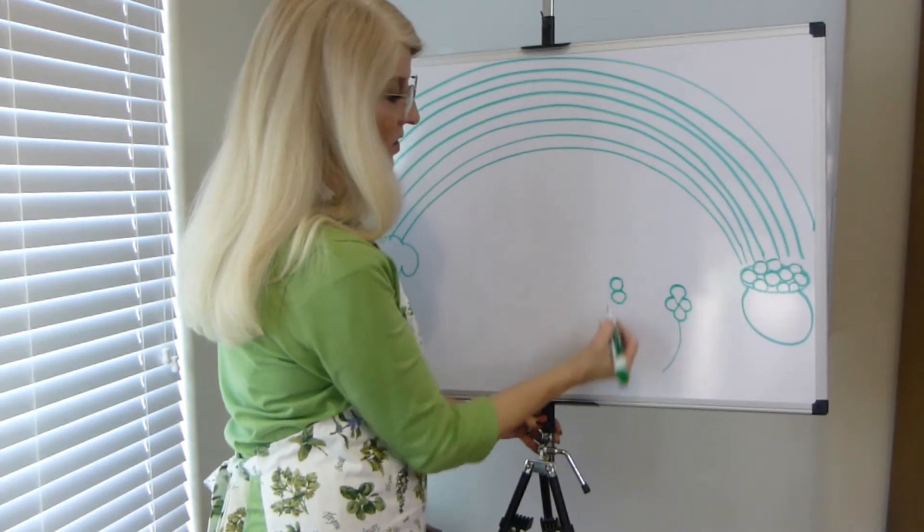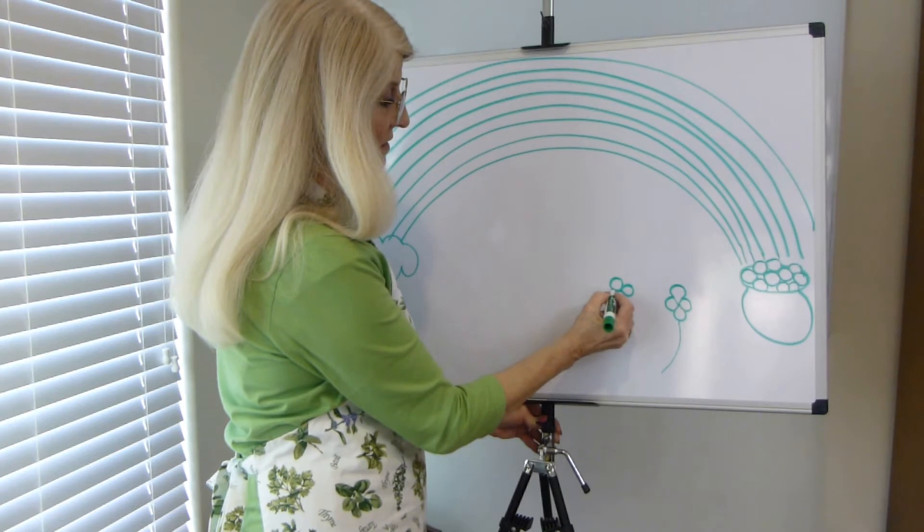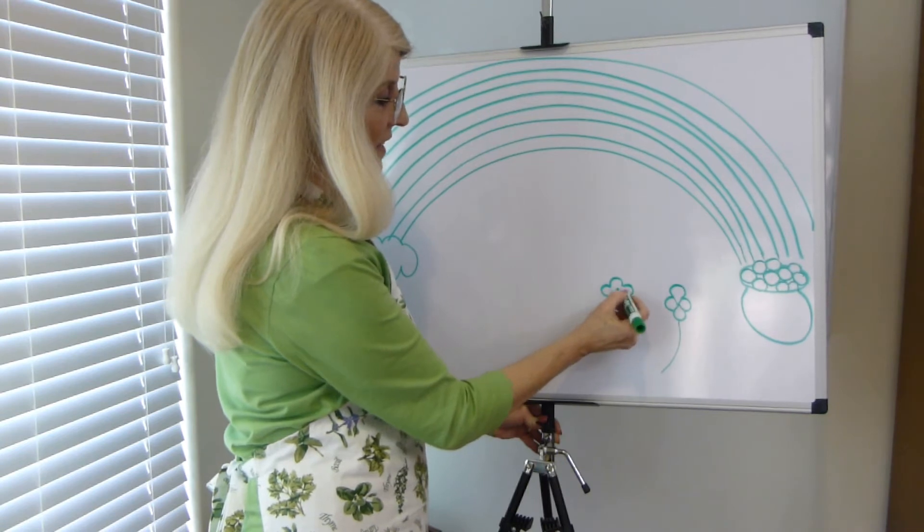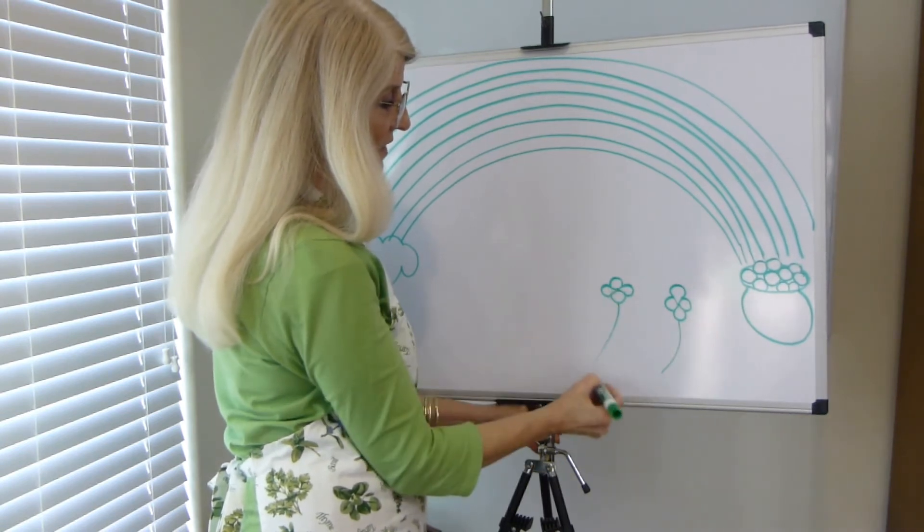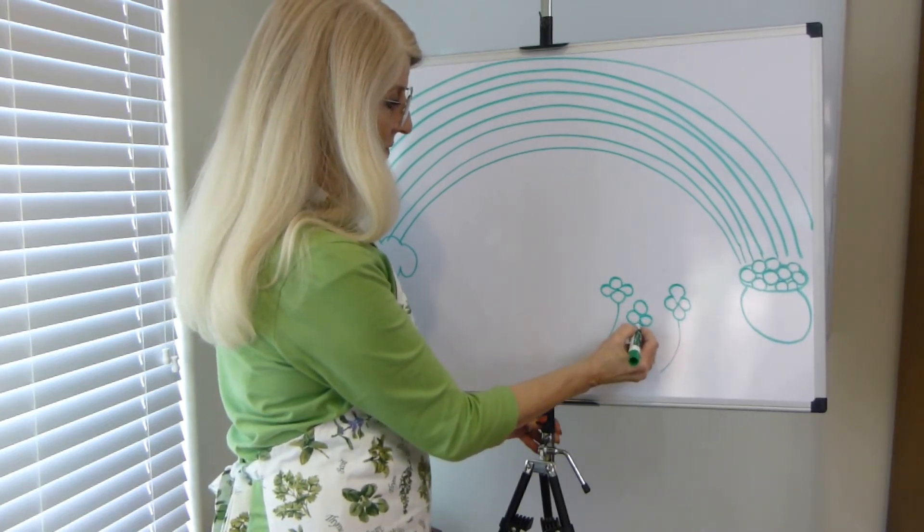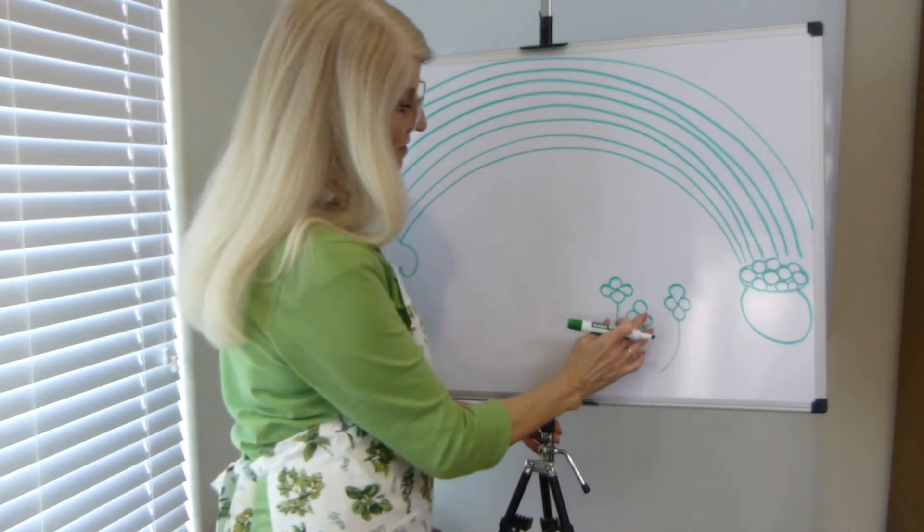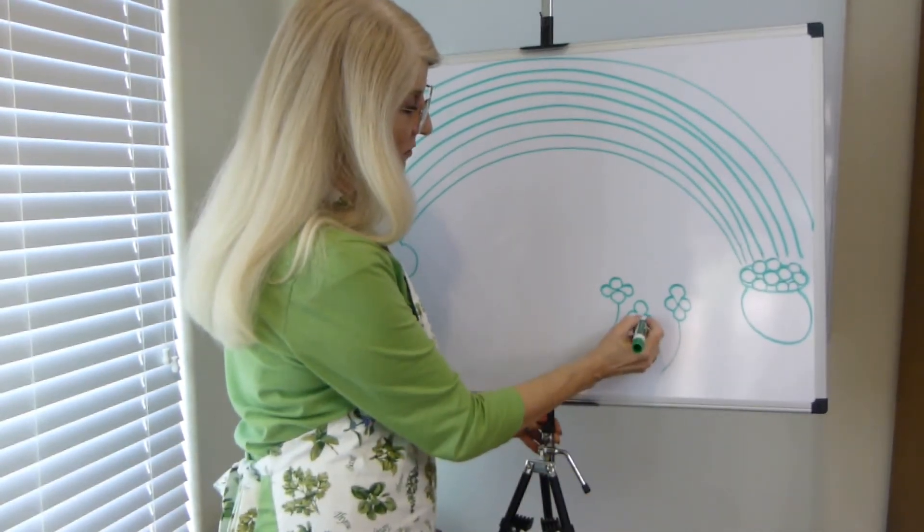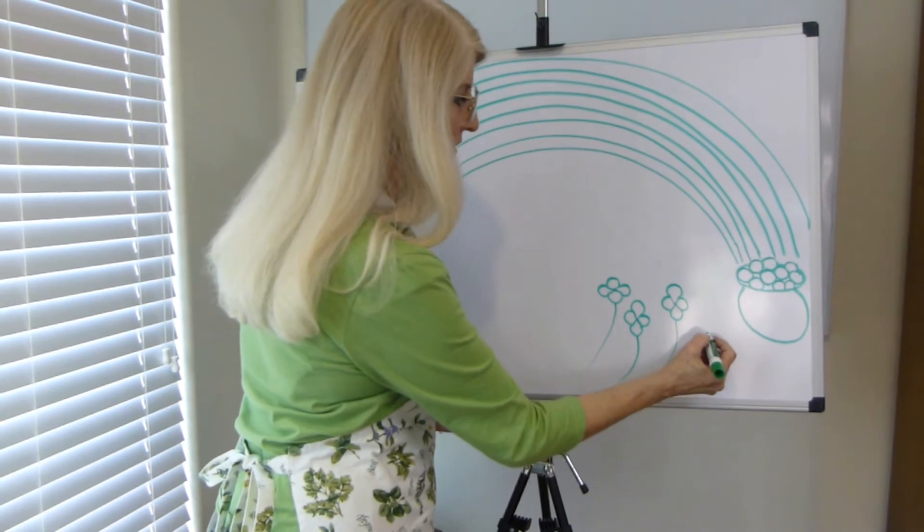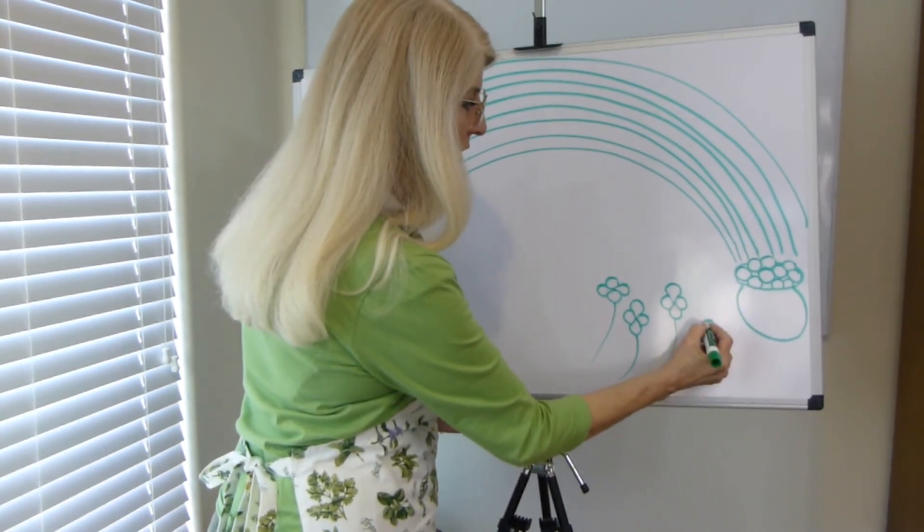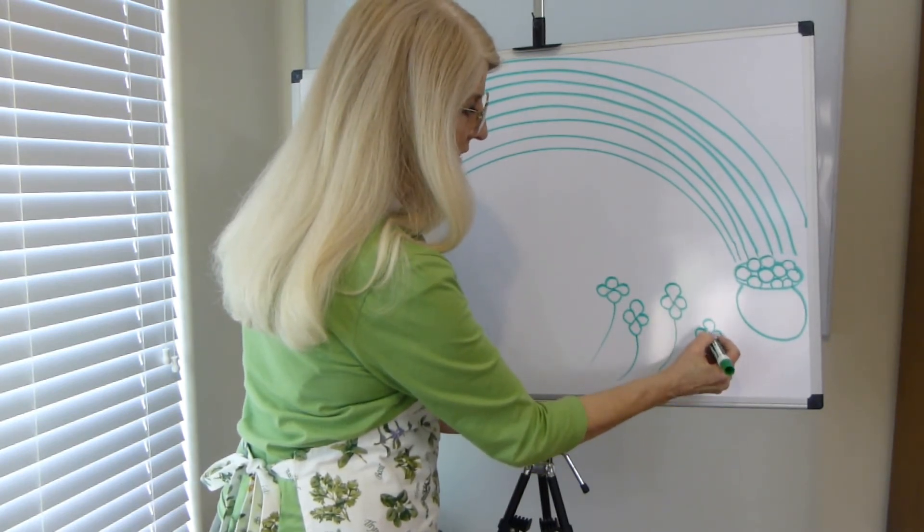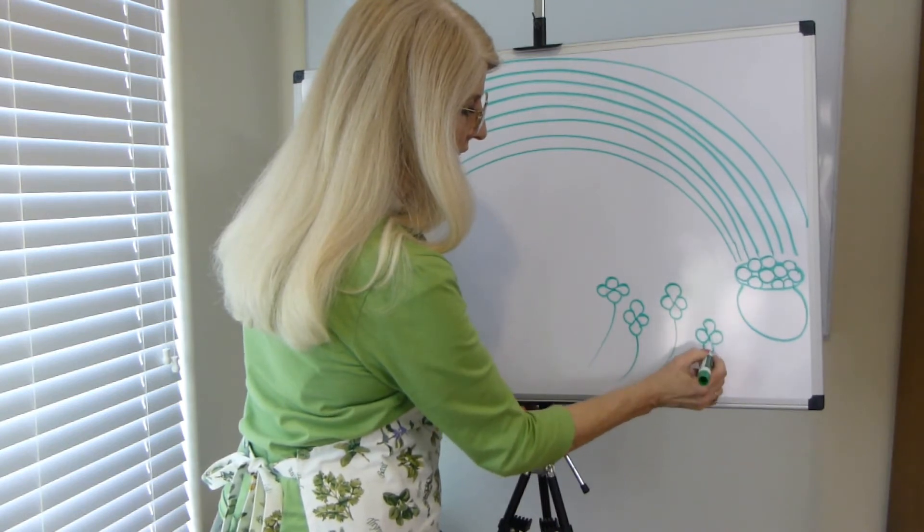And then let's put in the stem. Let's erase the lines in the middle. Let's draw another one. Circle, circle, circle, circle. Let's erase the lines in the middle, put a dot there, and make the lines connected. How about another one? Four circles. This is a field of four-leaf clovers.